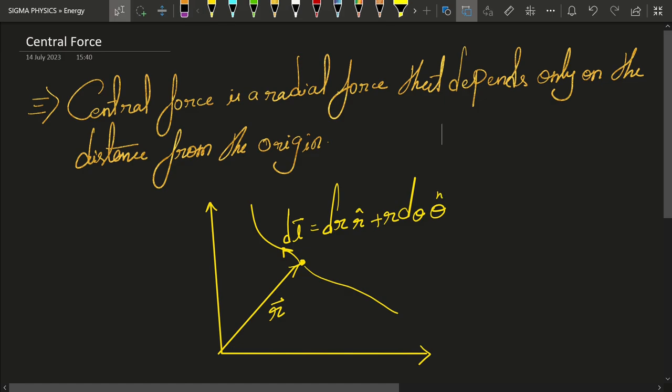And the central force as it states is a radial force. That is, it depends only upon the radial vector or the radial direction, its distance from the origin, and hence it looks something like this. This would be a central force and it would be a function of r and will always point in the r cap direction.